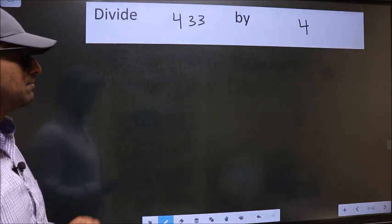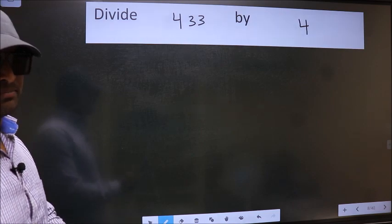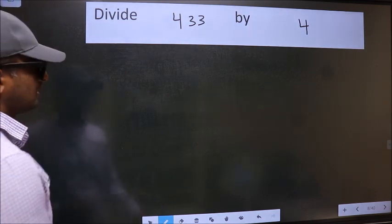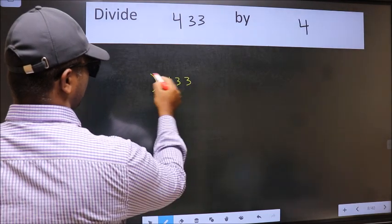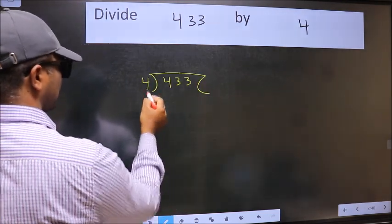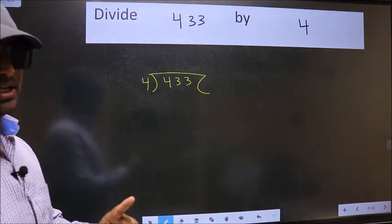Divide 433 by 4. To do this division we should frame it in this way. 433 and 4 here. This is your step 1.